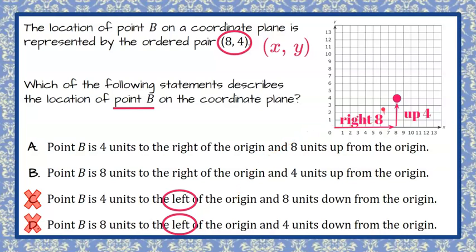We know that point B is not to the left of the origin. I notice here that point B is 4 units to the right of the origin for A, and B says point B is 8 units to the right of the origin. So the only one of these that is correct is B because it is not 4 units to the right, it is 8 units to the right.